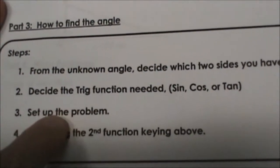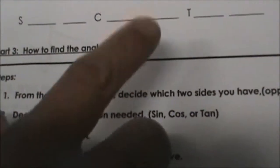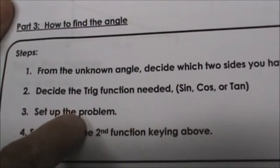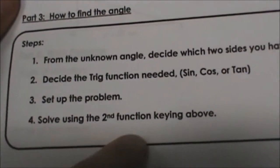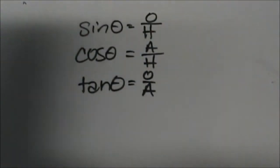Then we're going to set the problem up just like we do normally, but instead of the variable being x in the proportion, the variable is going to be at the angle. Then we're going to solve, and we're going to use this second function key to solve for it. So let's go through a couple of practice problems here.